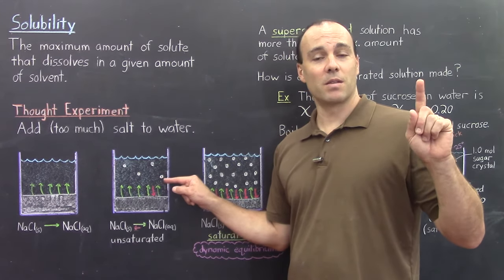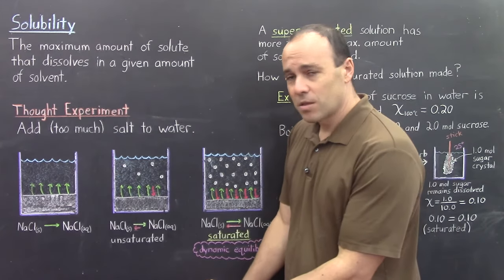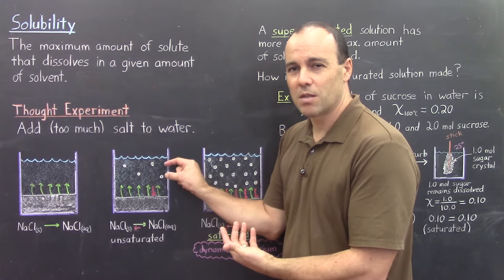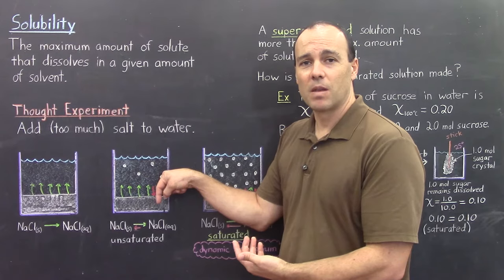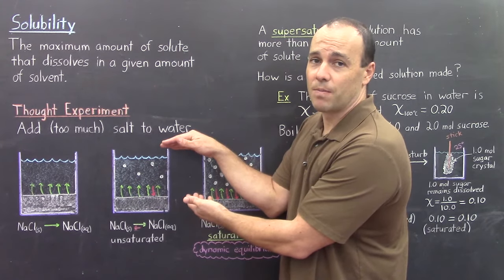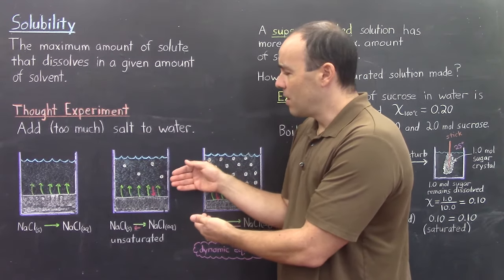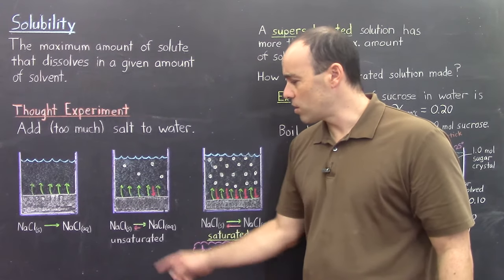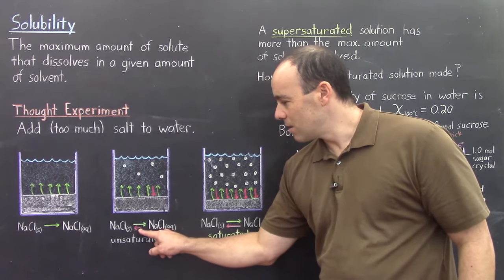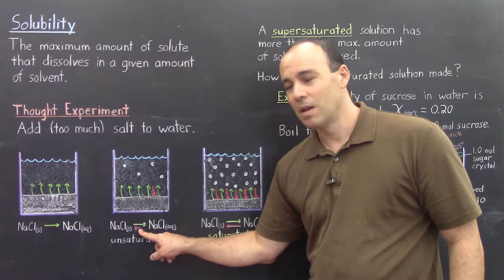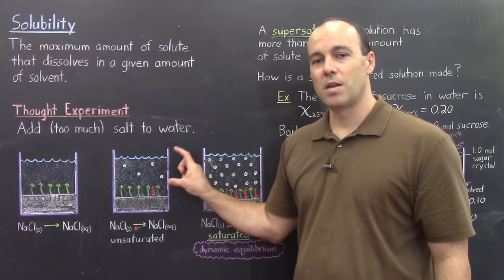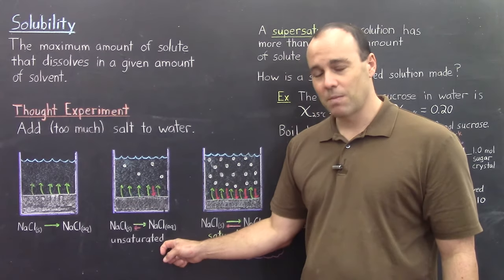It has not yet reached its limit; however, there is a little bit of concentration here. Salt is still dissolving at a pretty high rate, but with a little bit of salt already dissolved, some of these dissolved particles can actually recrystallize back into the solid phase. Since the dissolving is occurring much more rapidly than the recrystallization, the concentration will continue to increase until it reaches its limit. We can describe this solution as unsaturated.